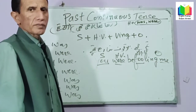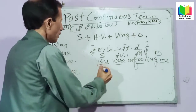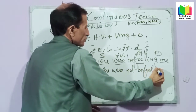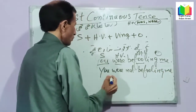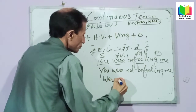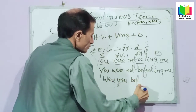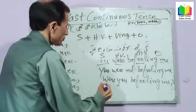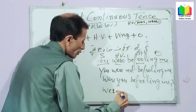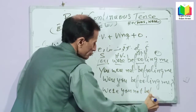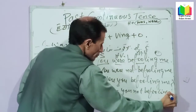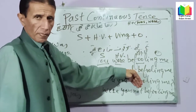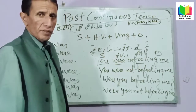If we want to change it into negative: You were not befooling me. And for interrogative: Were you befooling me? For interrogative negative: Were you not befooling me? You can also say: You weren't befooling me, or Were you not befooling me? Same thing.